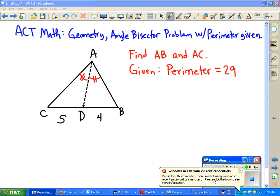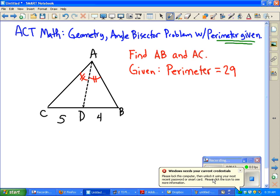In this case, the perimeter is given, and we know that the perimeter is equal to 29. We have an angle bisector AD, so these two angles are congruent. We know that CD is 5 and DB is 4. We're asked to find AB and AC.